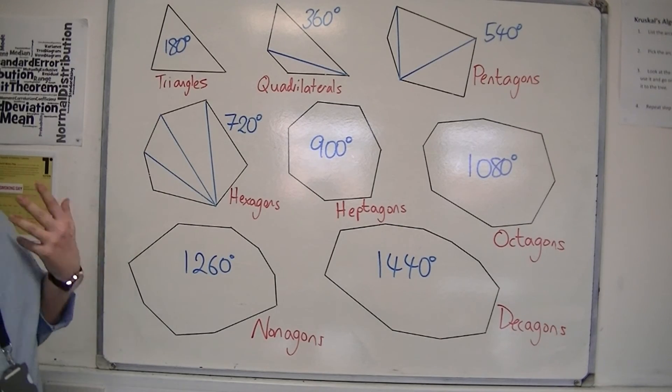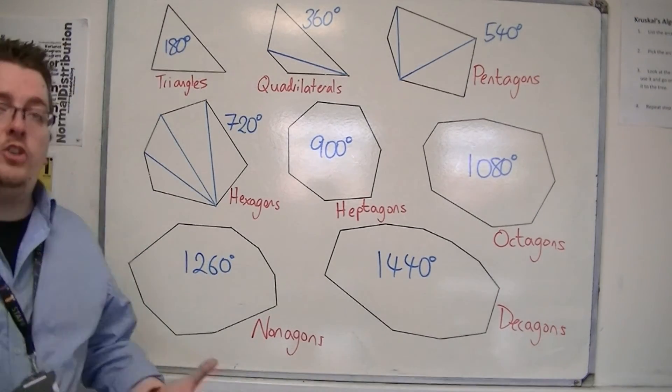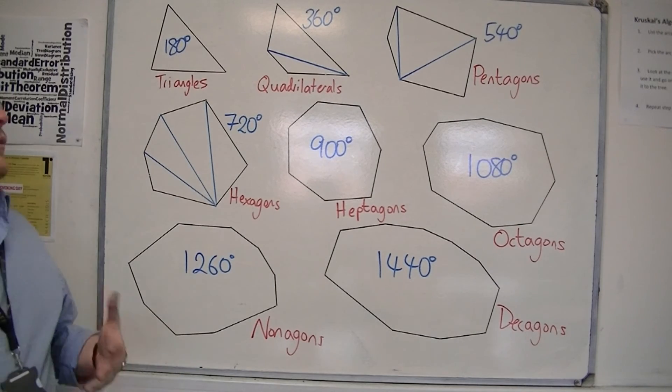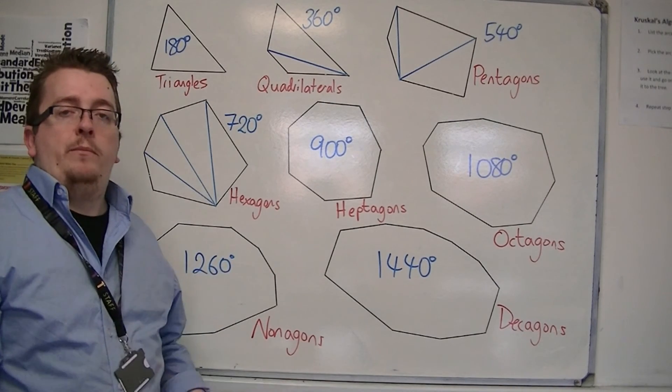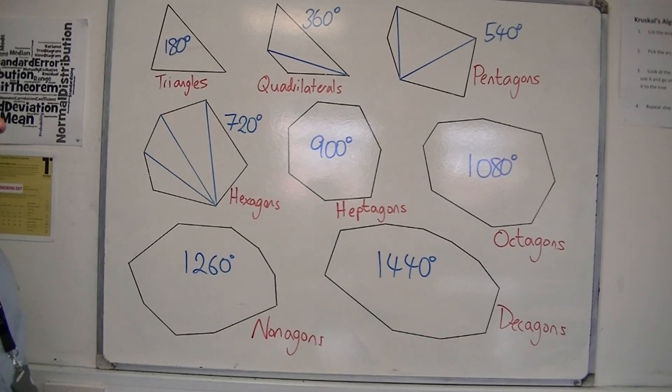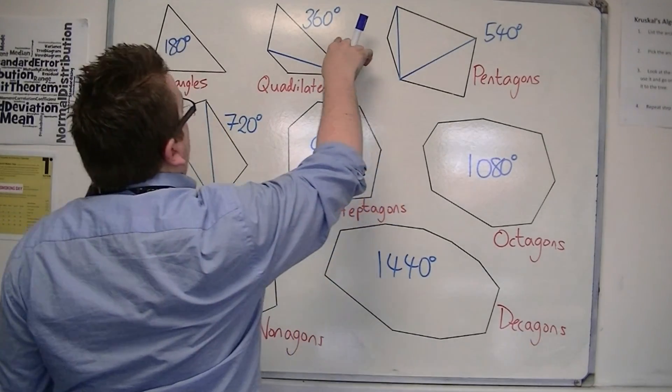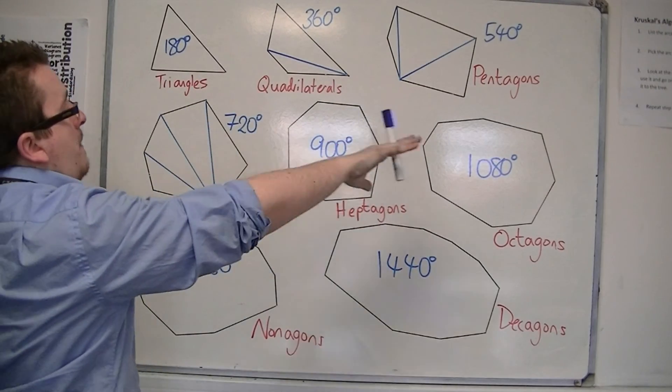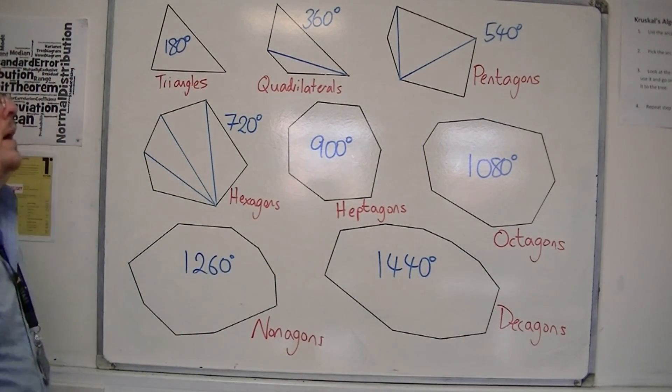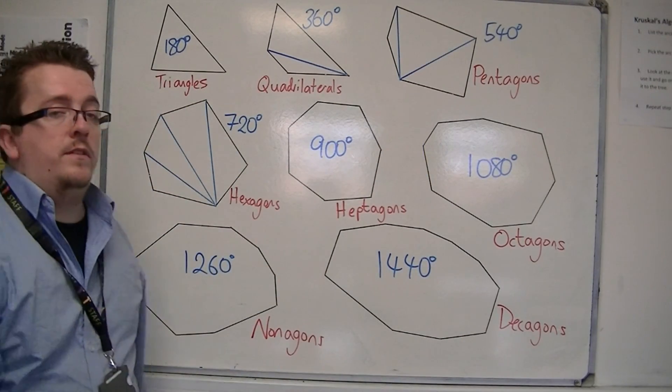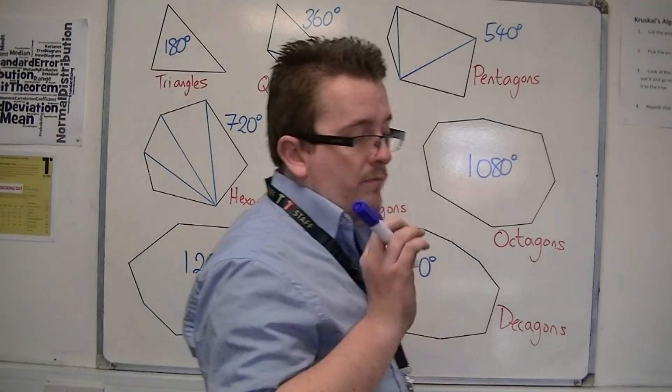So really, knowing that you can split a shape up into several triangles is a problem-solving technique which is very useful. So beyond quadrilaterals and 360, I wouldn't remember these numbers. But knowing that you can split the shapes up into triangles is key.